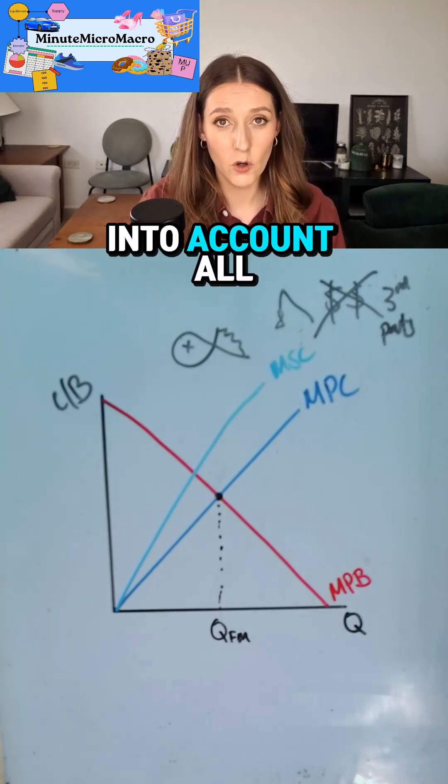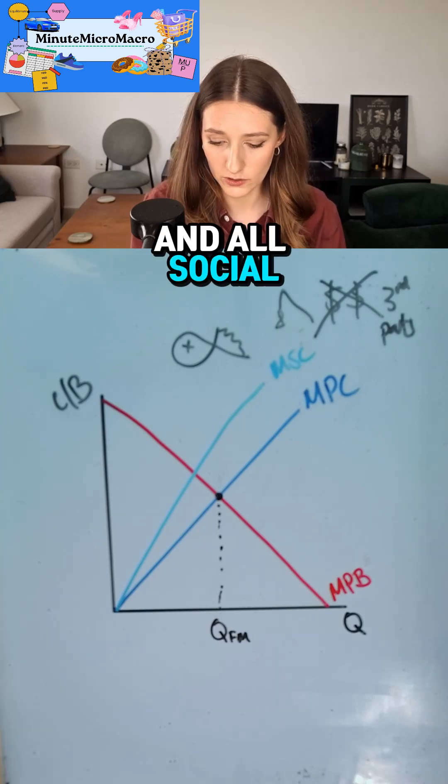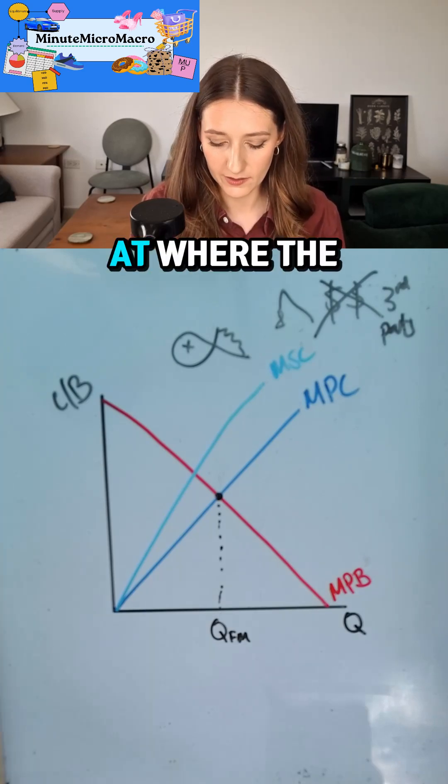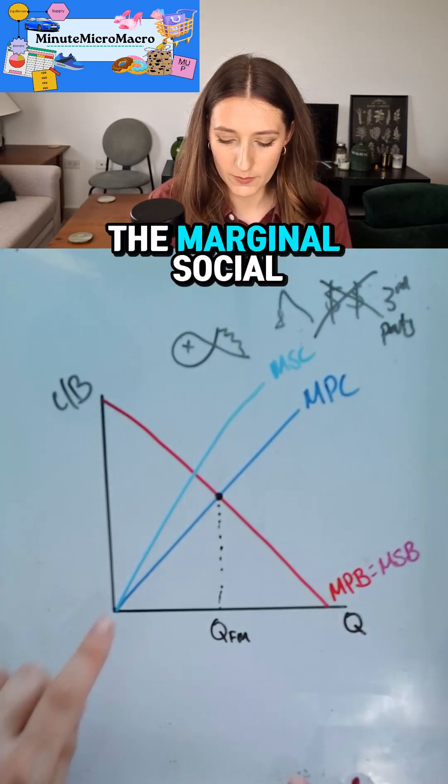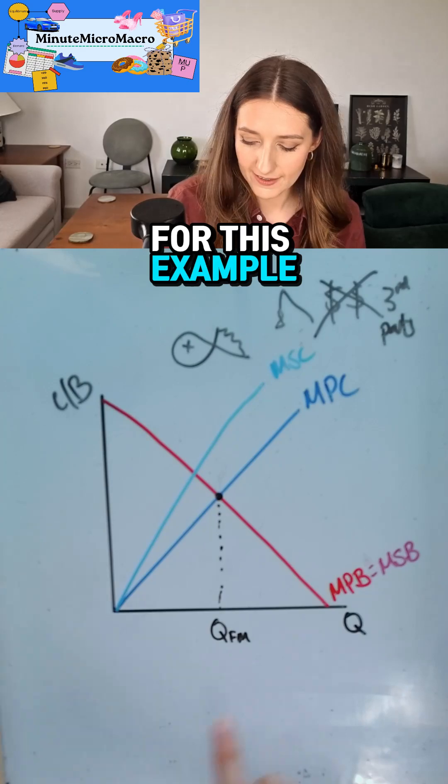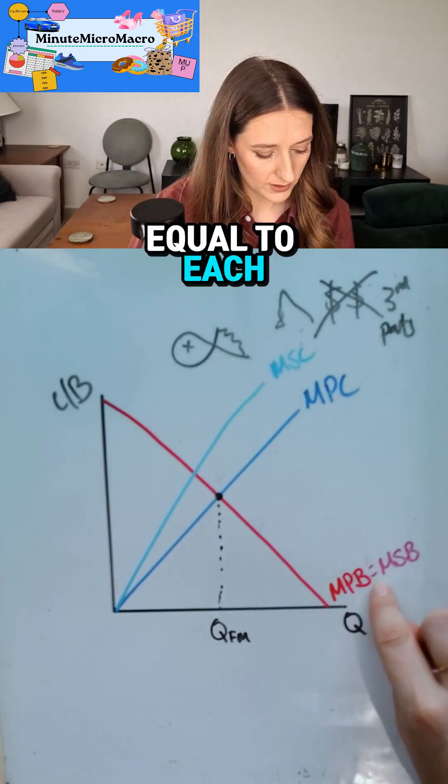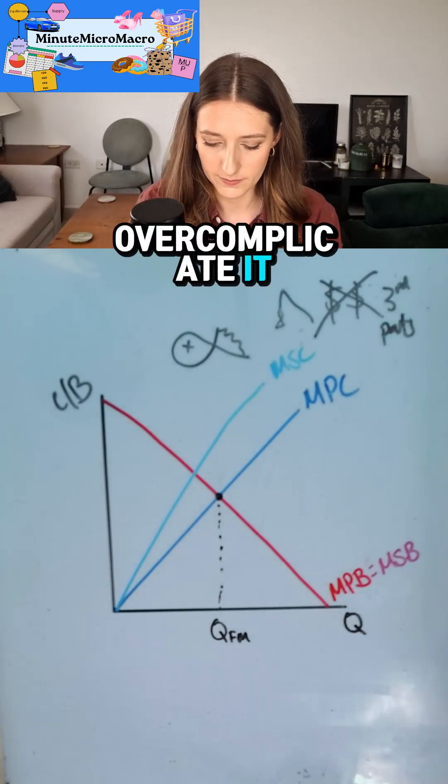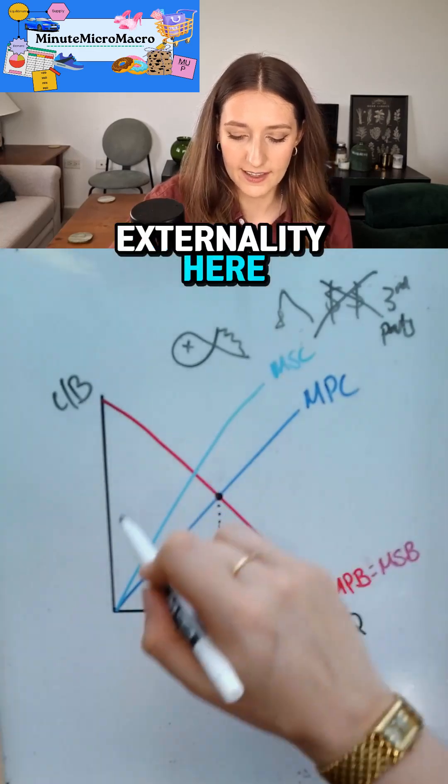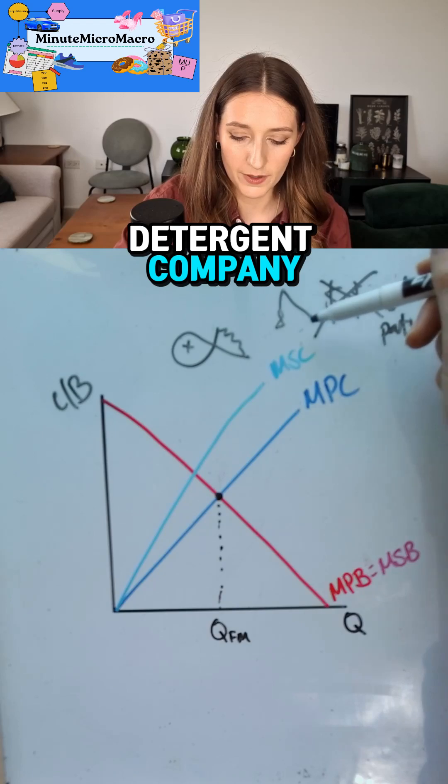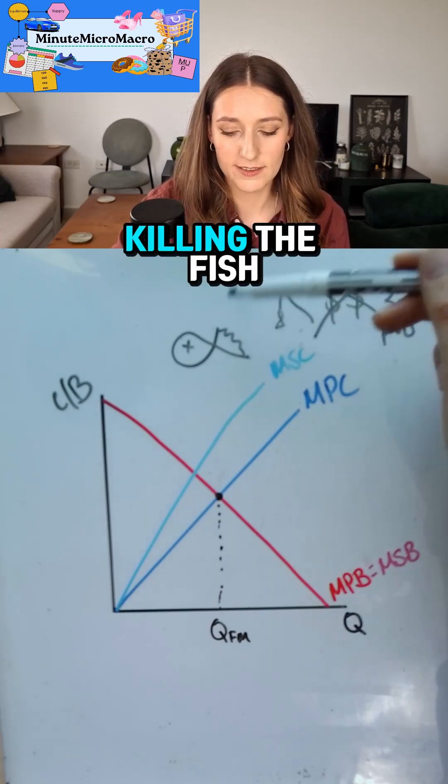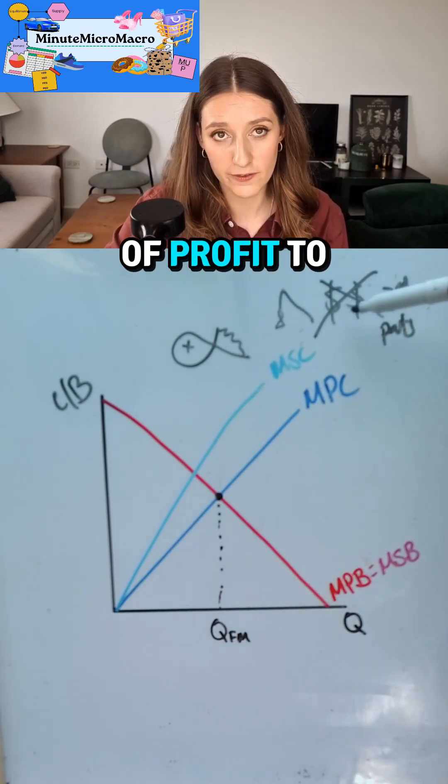Now, if the universe is perfect and we took into account all social costs and all social benefits, we would produce at where the marginal social benefit equals the marginal social cost. For this example, I'm going to leave my benefits equaling to each other so we don't overcomplicate it. So we're just assuming the only externality here is the externality from the laundry detergent company pouring their chemicals into the waters, killing the fish, causing a loss of profit to a third party.